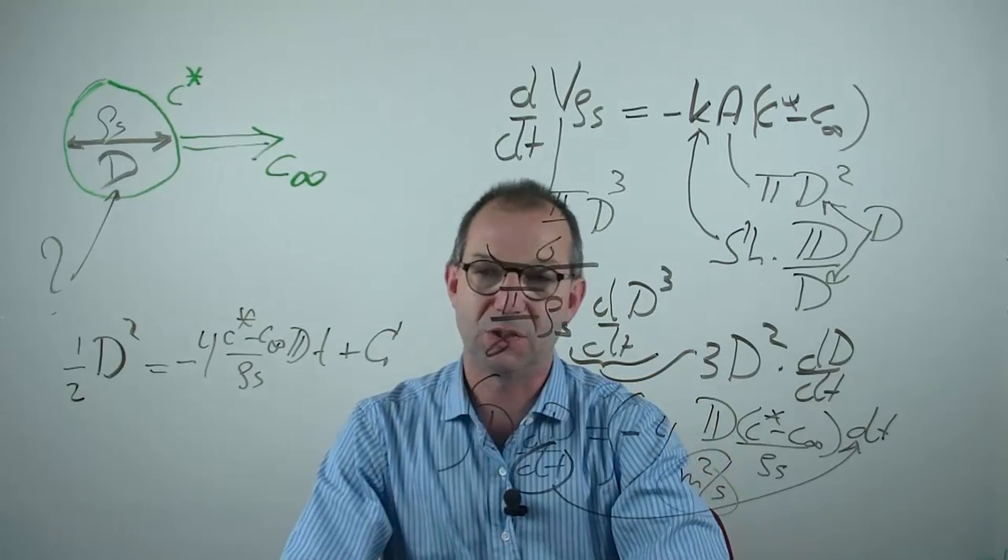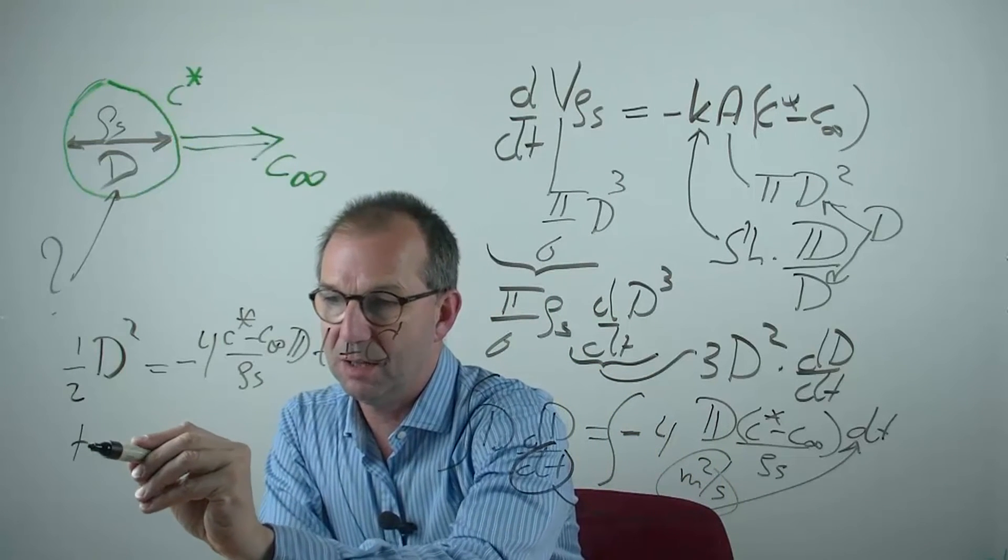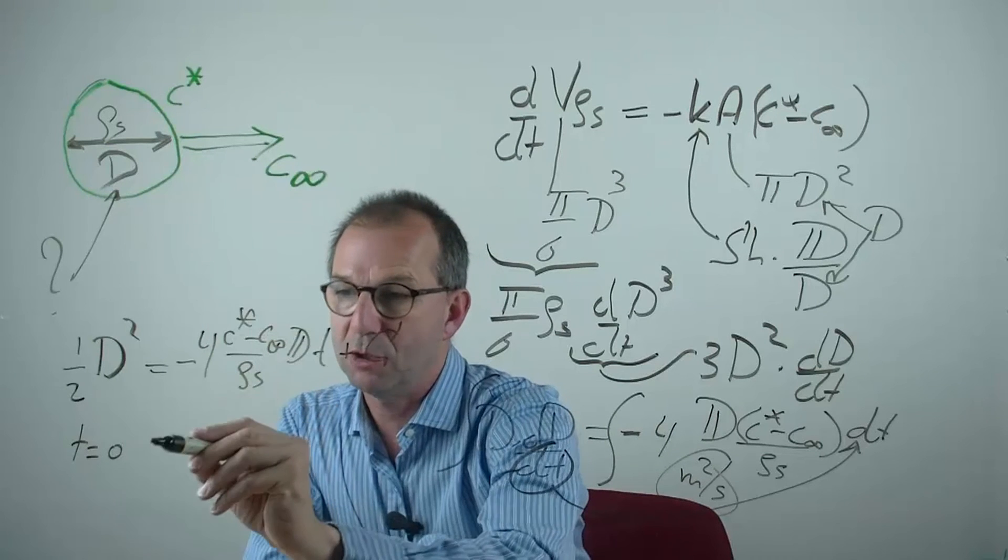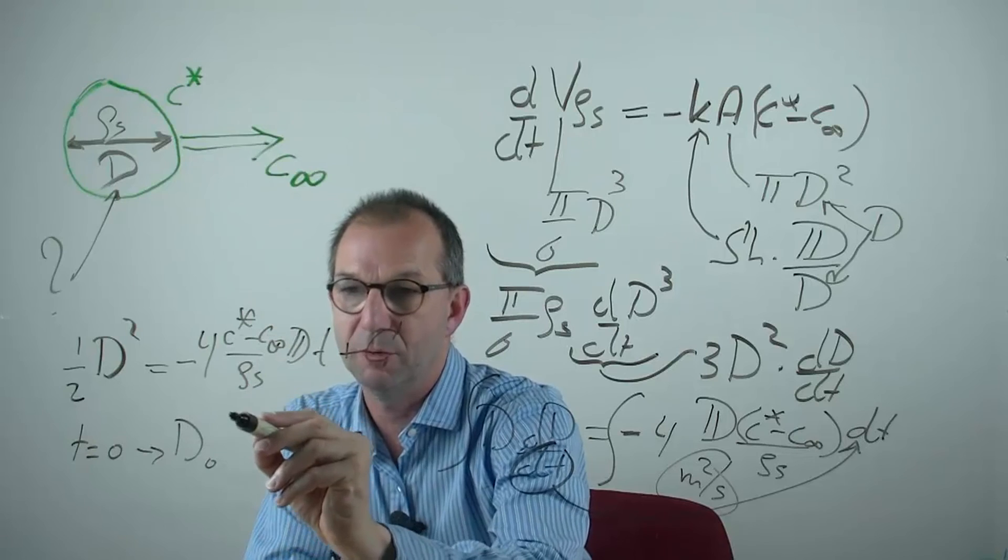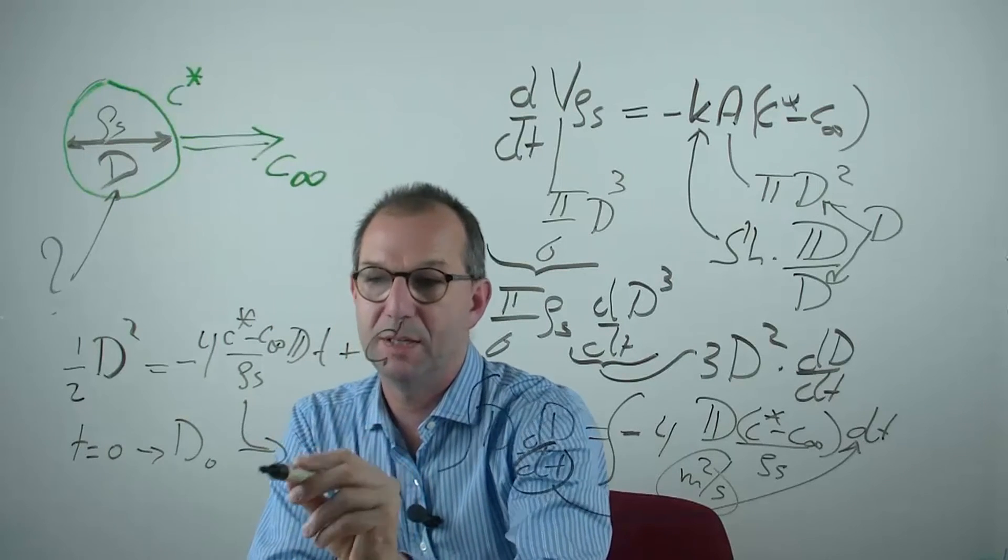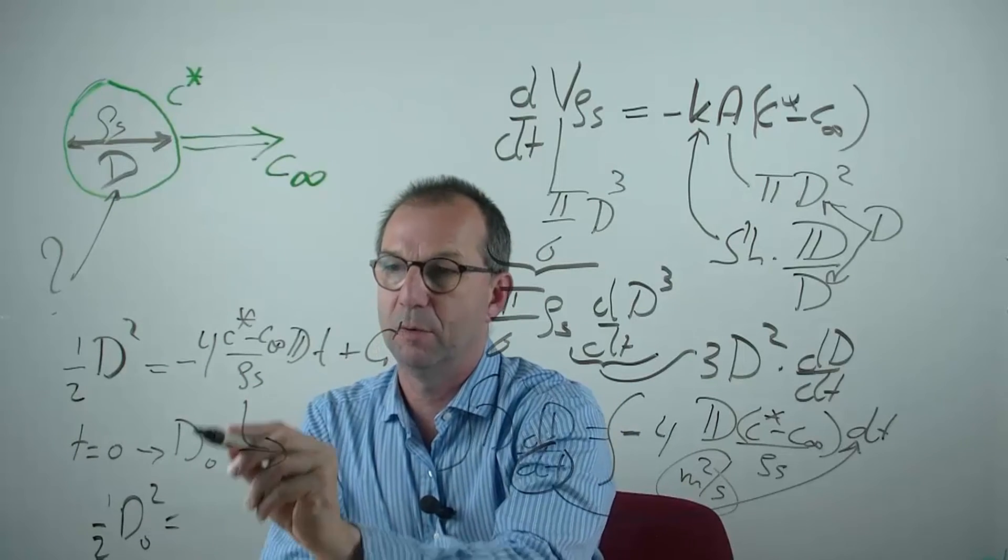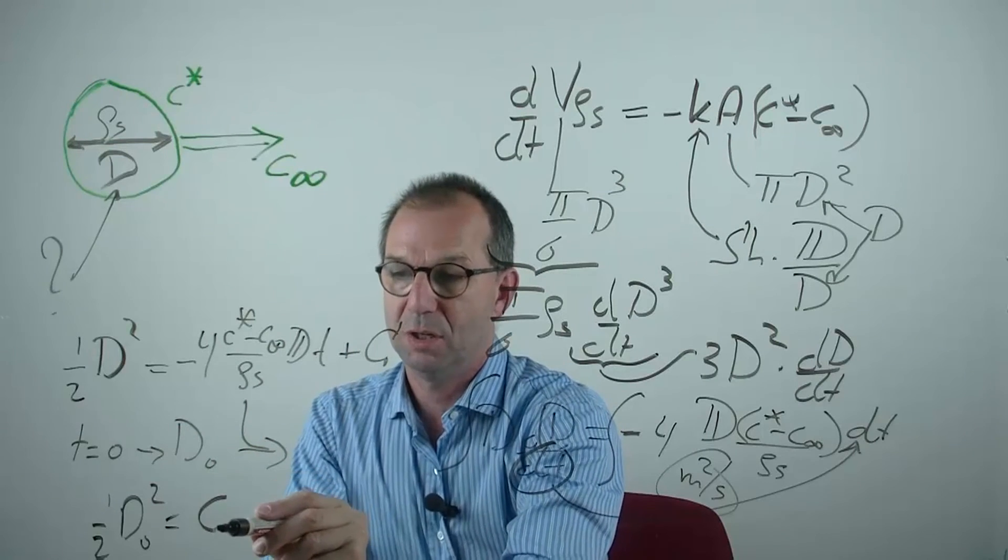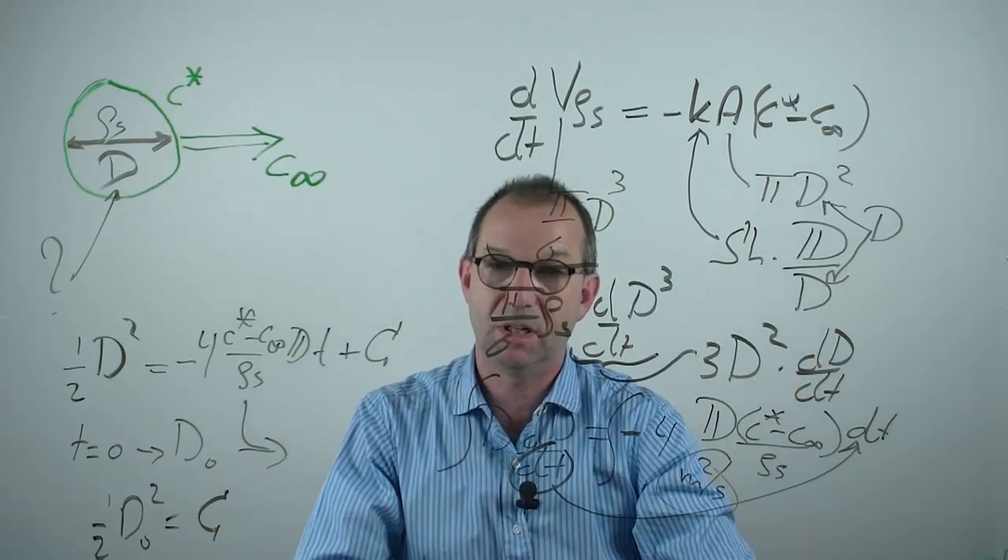All that is needed is finding something for this C capital. And for instance we could say at the beginning. So the sphere starts to evaporate from a given diameter D zero. Put that in here and you get a half D zero squared equals this is zero because it's time zero. It's this capital C. Combine these two and you get what we had on the sheet in the lecture.